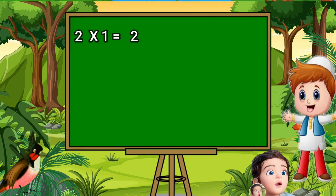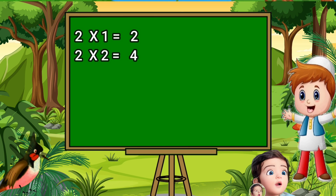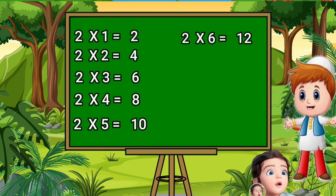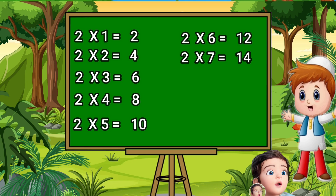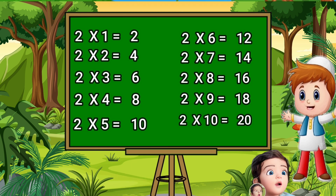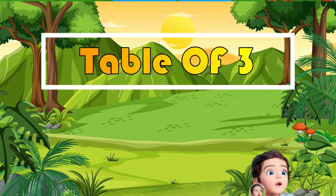Two ones are two. Two twos are four. Two threes are six. Two fours are eight. Two fives are ten. Two sixes are twelve. Two sevens are fourteen. Two eights are sixteen. Two nines are eighteen. Two tens are twenty.